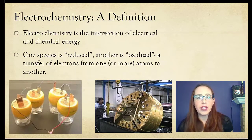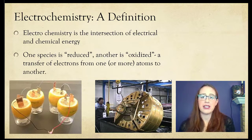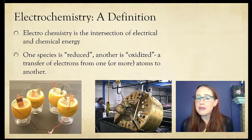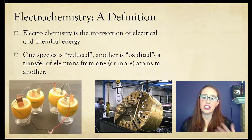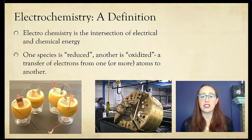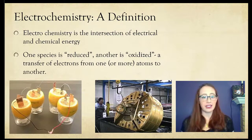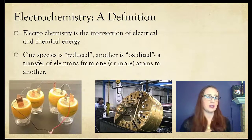So first off, what is electrochemistry? This is the chemistry at the intersection of electrical and chemical energy. It's possible because in some reactions, electrons are exchanged between species. We can then direct this flow of electrons to do work for all sorts of different purposes, such as making electricity or electroplating.